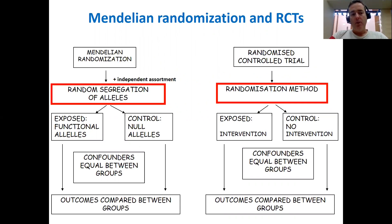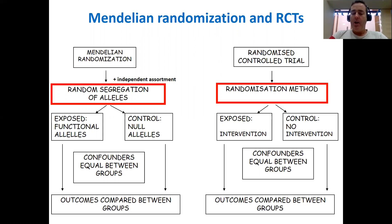It's useful to conceptualize Mendelian randomization similarly to a randomized controlled trial. In an RCT, we physically randomize individuals into a treatment group and a placebo group. This randomization process ensures that on average those two groups are equal with respect to both known and unknown confounders. So when we follow up the two groups at a later date, if there's any difference between them, it has to be because of our treatment — and so we can say that the treatment causes the outcome.